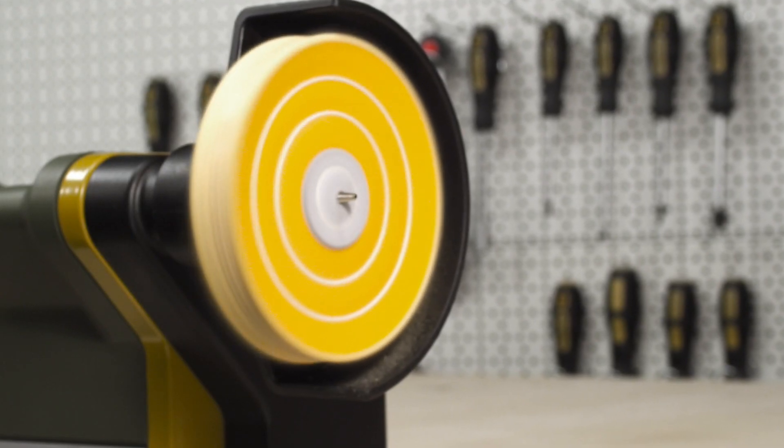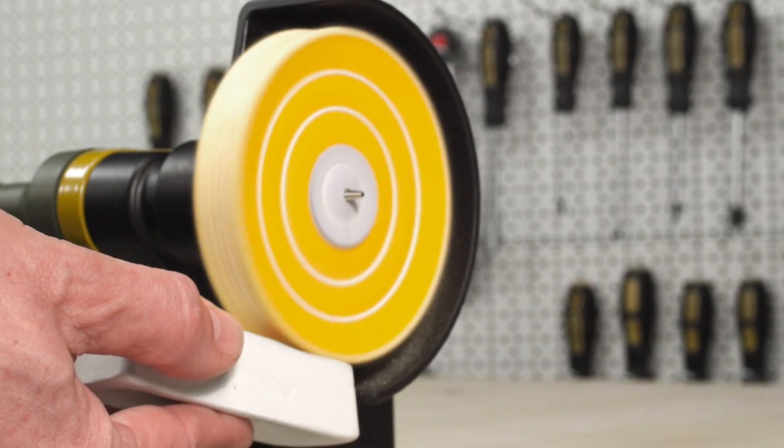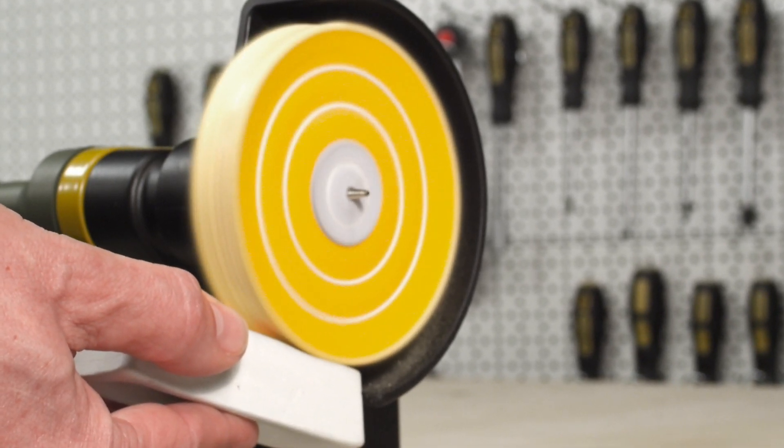To apply polishing paste to the polishing wheel, simply press the bar lightly against the operating polishing wheel. Now you can begin polishing the workpiece easily.